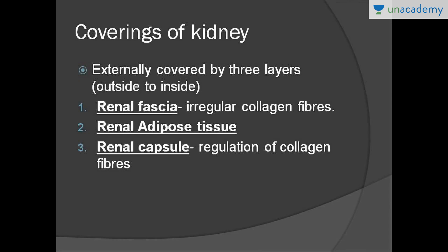Now we'll look at the three coverings of the kidney from outside to inside. The outermost is the renal fascia, consisting of irregular collagen fibers. Next is the renal adipose tissue, which is white adipose tissue. The innermost is the renal capsule, made of regular collagen fibers — like a sandwich of adipose tissue between two layers of collagen, protecting the kidney from damage.